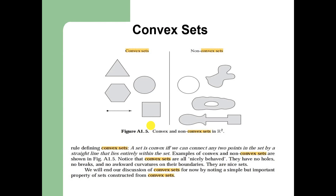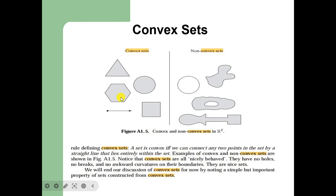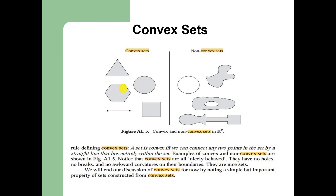Here are the examples of convex sets. On the left hand side are the convex sets. The definition of a convex set is that a set is convex if we can connect any two points in the set by a straight line that lies entirely within that set. For example, if we connect two points with a straight line and that straight line lies within the set, then it is convex. These are all examples of convex sets, including one where connecting any two points yields a straight line that also lies within the set.